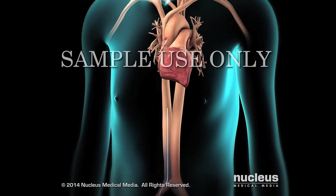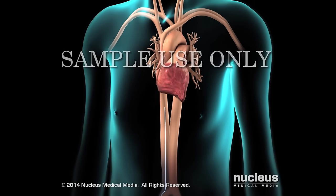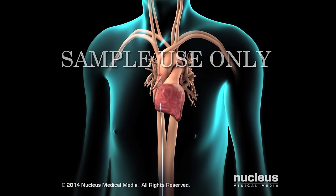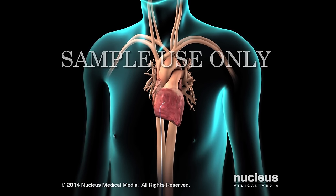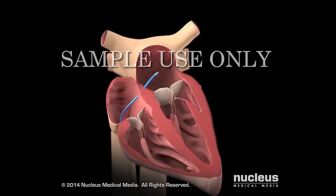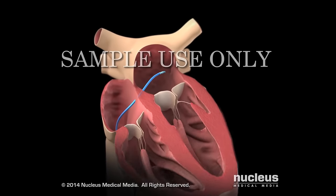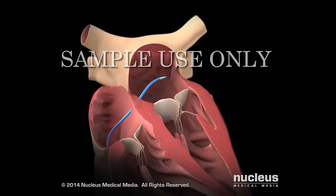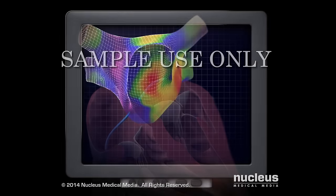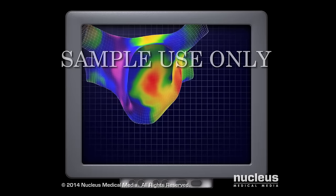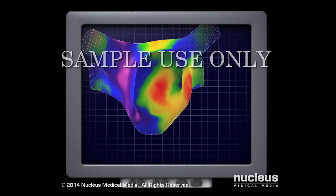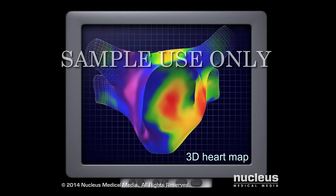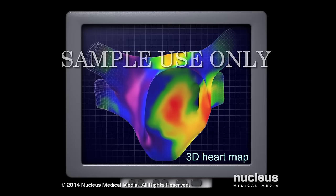The location and progress of the catheter will be monitored. When the catheter reaches the heart, the doctor will guide it to the area that is causing the arrhythmia. The doctor will find the problem areas using a 3D map of the electrical activity of the patient's heart.